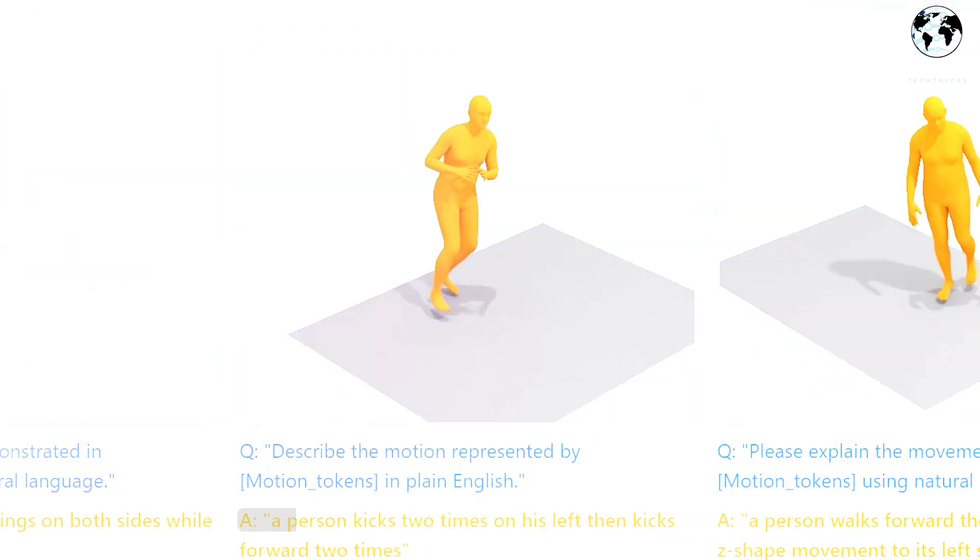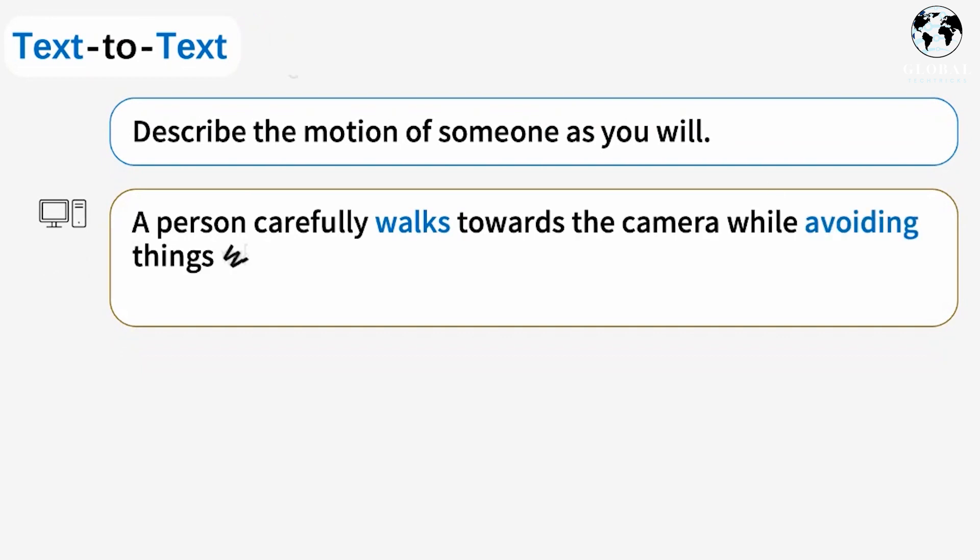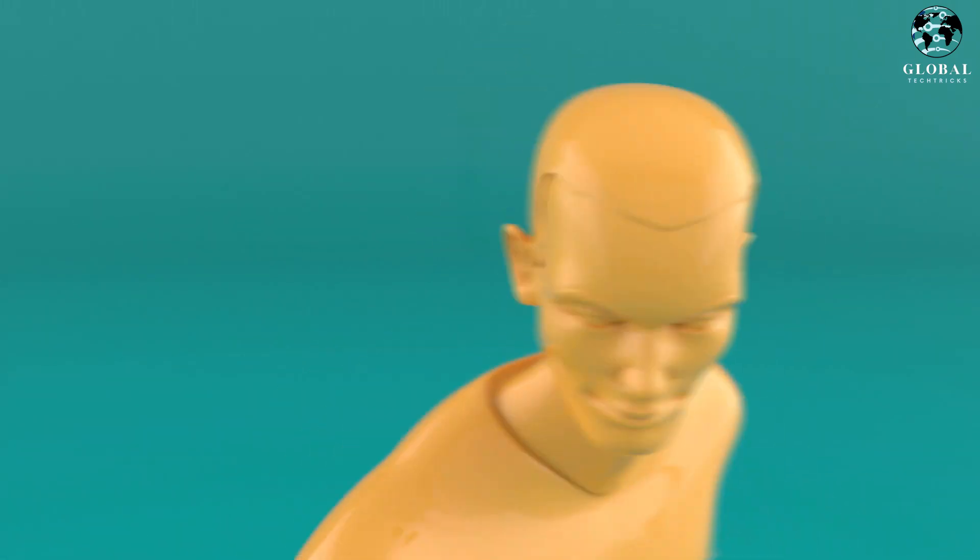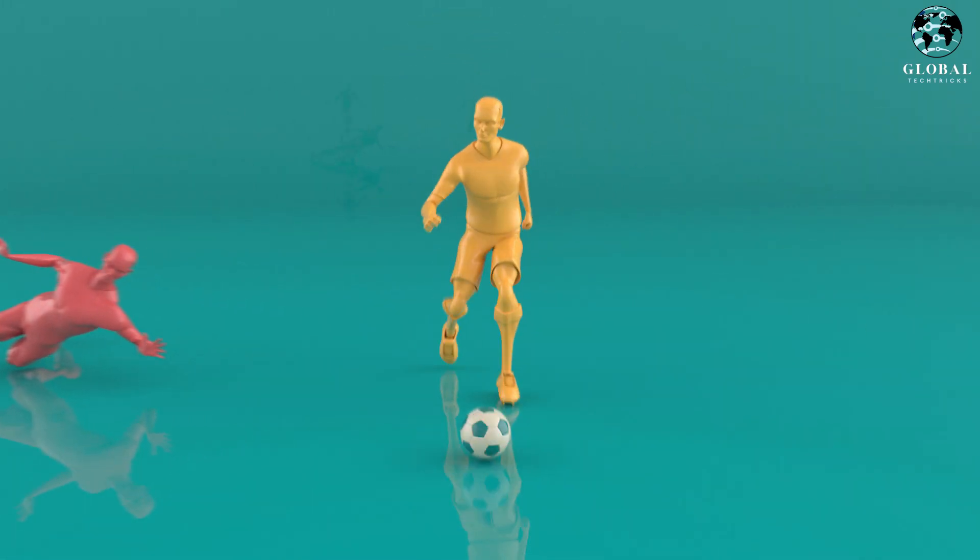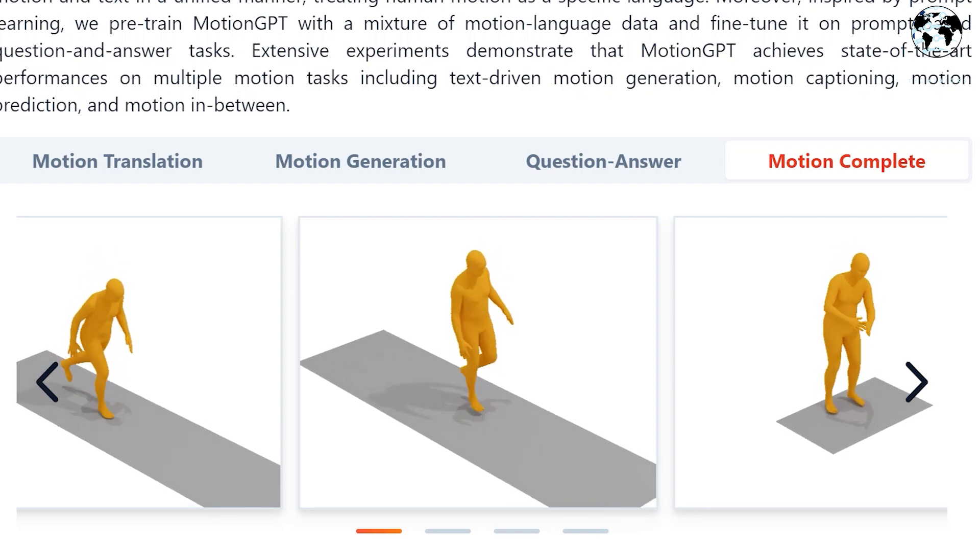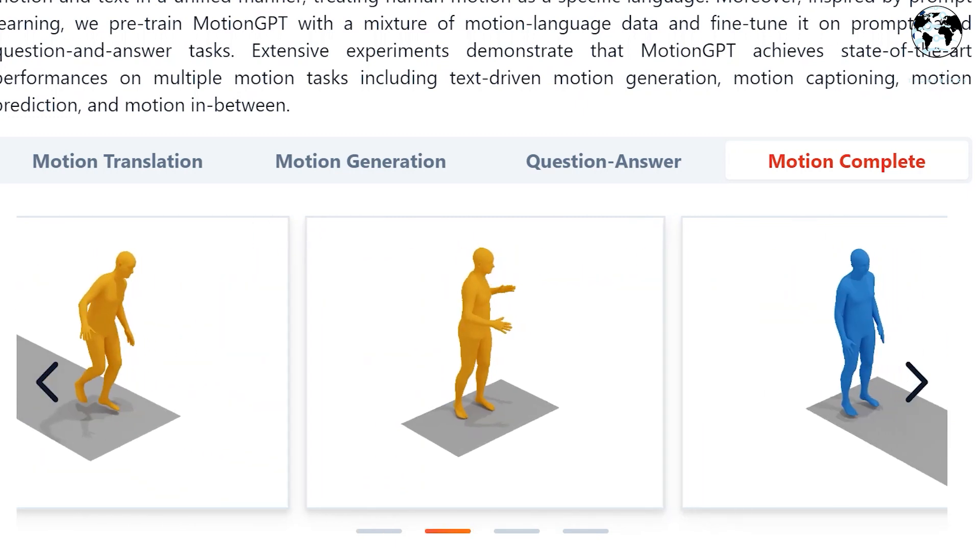Motion GPT also offers a text-to-text feature, where users can ask a question like, Describe the motion of someone as you will. In addition to generating descriptive responses, Motion GPT has the ability to predict movements. For example, it can analyze an animation of a blue figure wobbling and accurately predict that the figure is about to fall, subsequently generating an animation depicting the figure falling.